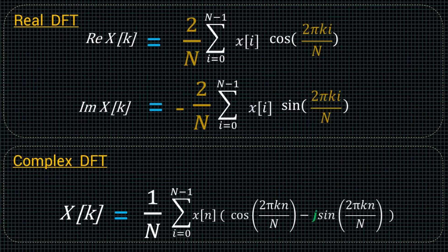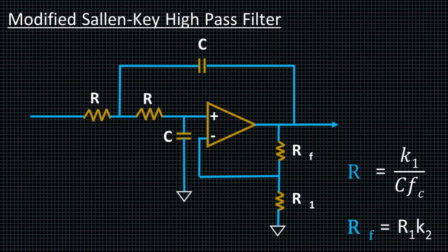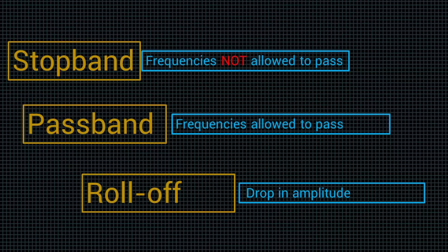You'll be able to build your own modified Sallen-Key analog filter, be able to build your own Bessel, Chebyshev, and Butterworth filters.